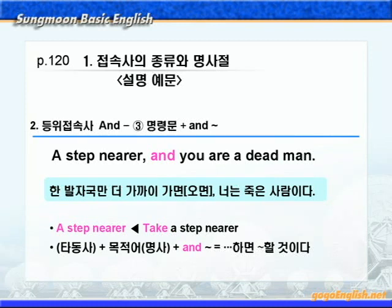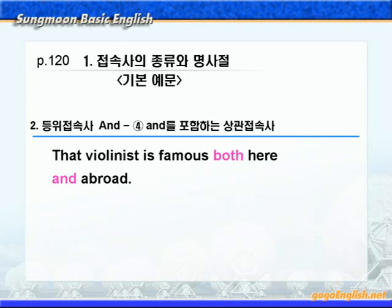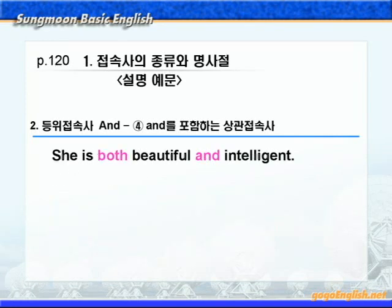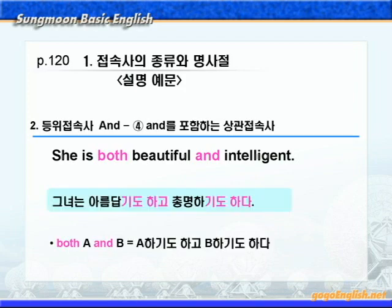다음 4번 and를 포함하는 상관접속사를 보겠습니다. 'Both A and B'는 A와 B 둘 다 혹은 A 하기도 하고 B 하기도 하다 이런 의미의 상관접속사입니다. 'That violinist is famous both here and abroad.' 그 바이올리니스트는 여기서나 외국에서나 다 유명하다 이런 말이 되겠습니다. 설명 예문으로 'She is both beautiful and intelligent.' 그녀는 아름답기도 하고 총명하기도 하다 이런 말이 되겠습니다.